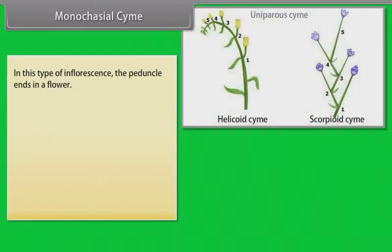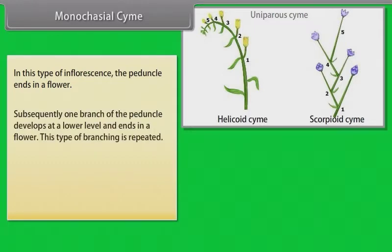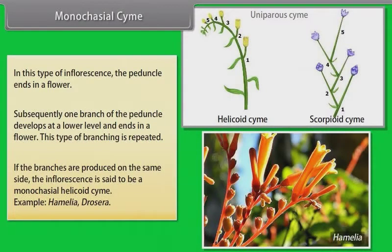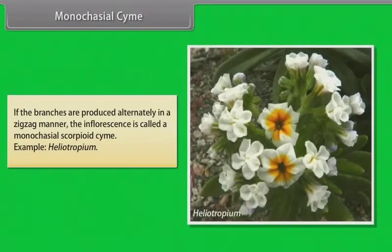In monochasial cyme, the peduncle ends in a flower; subsequently one branch of the peduncle develops at a lower level and also ends in a flower, and this type of branching is repeated. If the branches are produced on the same side, the inflorescence is a monochasial helicoid cyme — examples: Hamelia, Drosera. If the branches are produced alternately in a zigzag manner, the inflorescence is called a monochasial scorpioid cyme — example: Heliotropium.